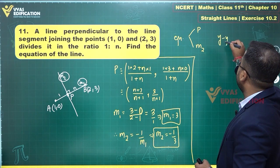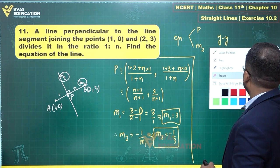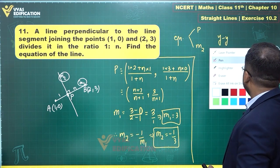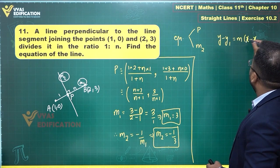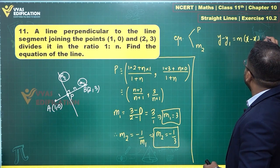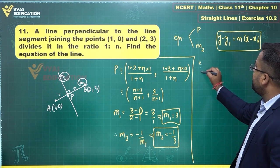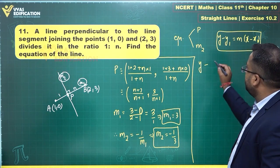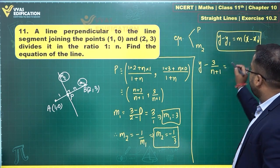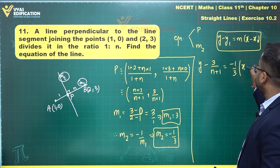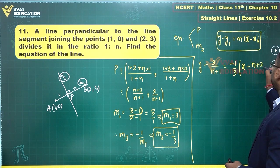y minus y using point and slope - this is the concept, this is the idea of point-slope form. So y minus point y1, this is what you need, is equal to slope minus 1 by 3 times x minus this x1, (n+2)/(n+1).